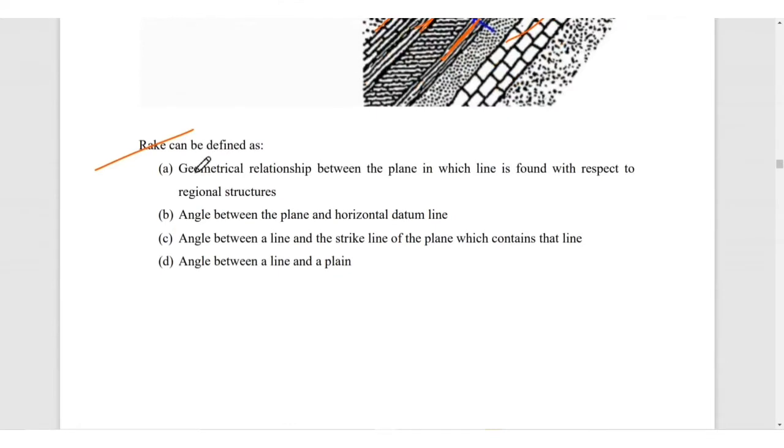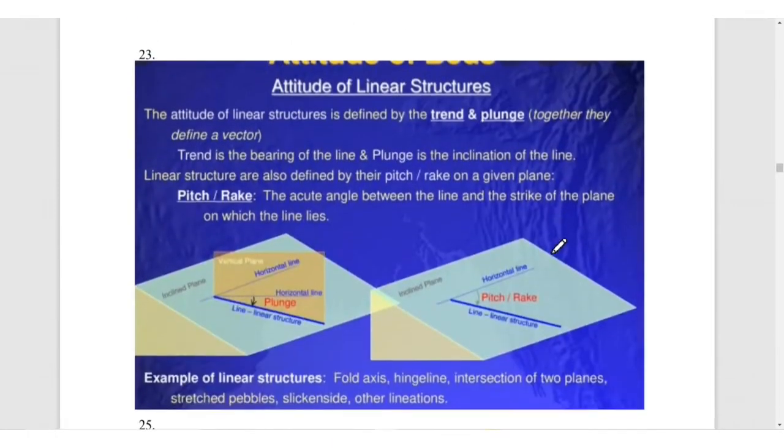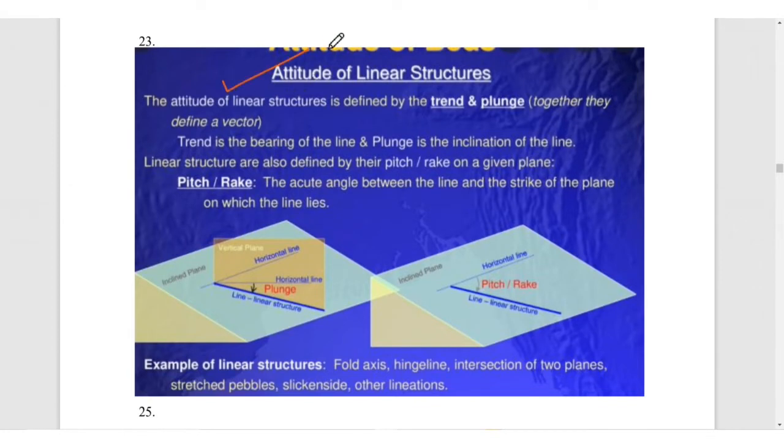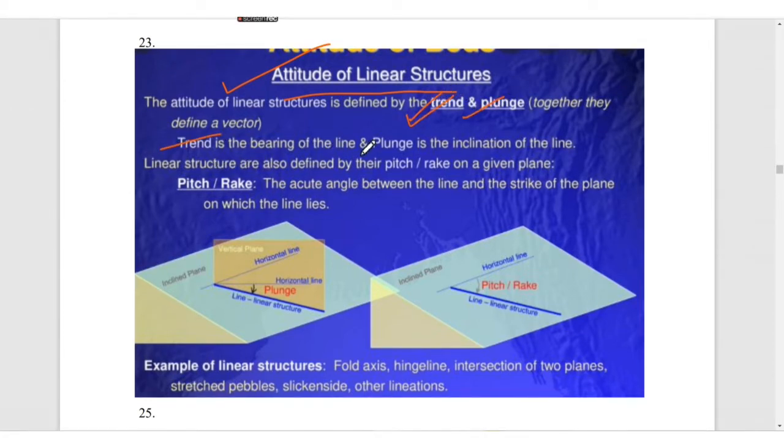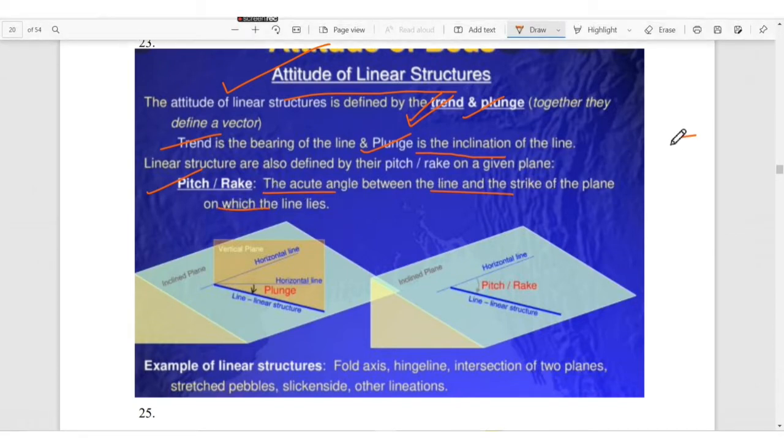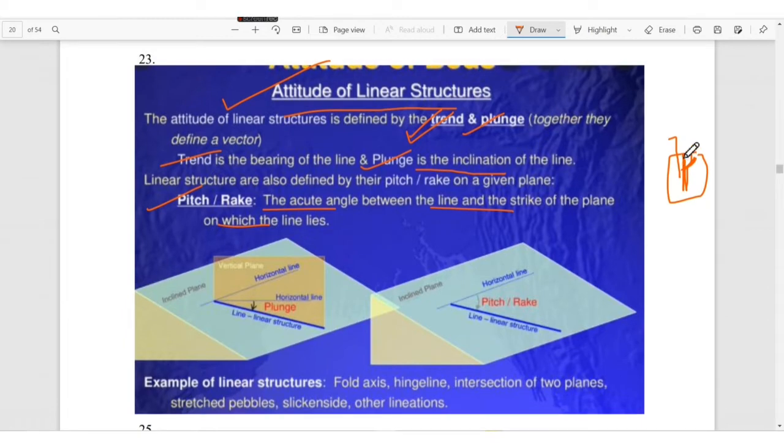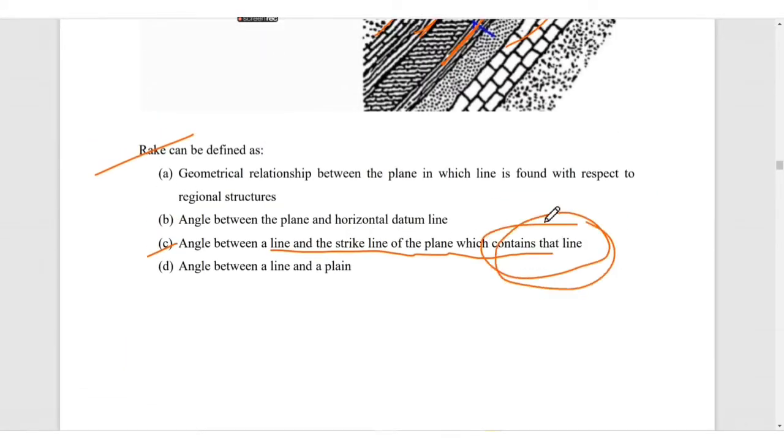Rake can be defined as the angle between a line and strike of the plane which contains that line. The attitude of linear structures can be determined by trend and plunge. Trend is the bearing of the line and plunge is the inclination or angle of the line. Rake and pitch are the acute angle between a line and strike of a plane on which the line lies. If this is a plane and a line is lying on the same plane, this angle will be rake. We are not extending the line vertically or horizontally; the angle on the same plane will be the rake or pitch.